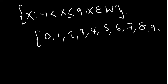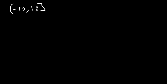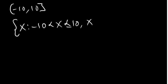Set builder notation is very important to understand. If they ask you to relate each interval set in set builder notation — for example, (−10, 10]: negative 10 not included, 10 included — the set builder notation is: x such that −10 < x ≤ 10, and x is a member of real numbers.